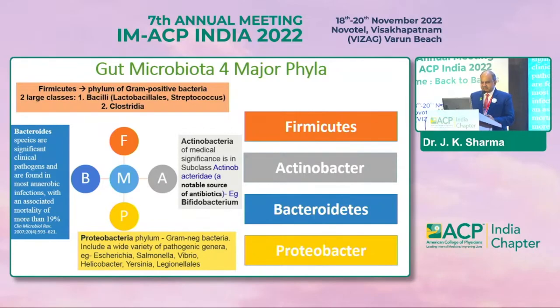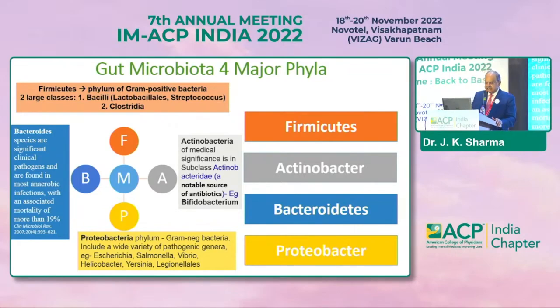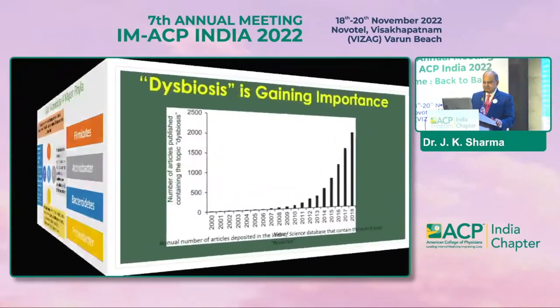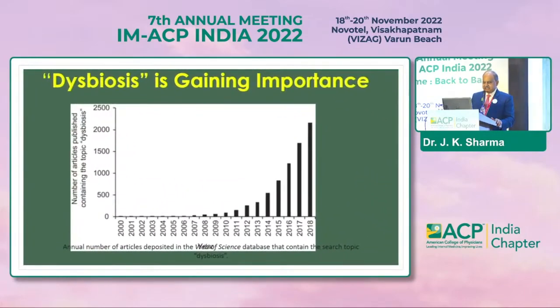Then the Proteobacteria — a phylum of gram-negative bacteria — encompass a wide variety of pathogenic genera like Escherichia, Salmonella, Vibrio, Helicobacter, Yersinia, and Legionella.